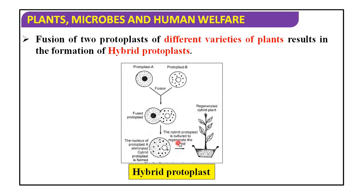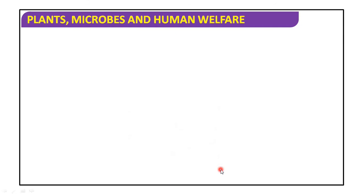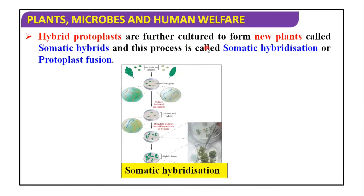The cybrid protoplast is cultured to regenerate the cybrid — this is the regenerated cybrid plant, also known as a hybrid protoplast. Hybrid protoplasts are further cultured to form new plants called somatic hybrids, and this process is called somatic hybridization or protoplast fusion. This diagram shows isolated cells, protoplast induced fusion, somatic cell hybrids, and stimulated division and differentiation of the hybrid — these are the hybrid callus, known as somatic hybridization.